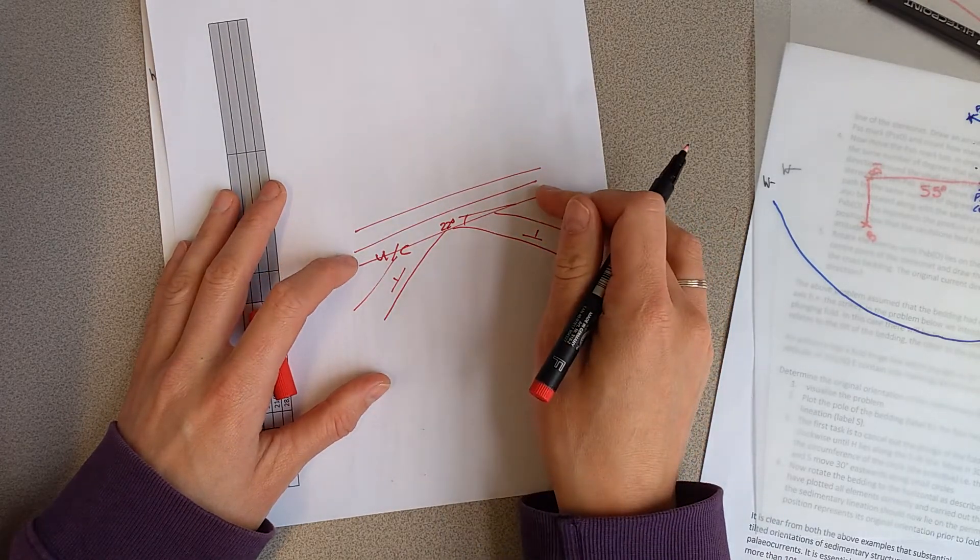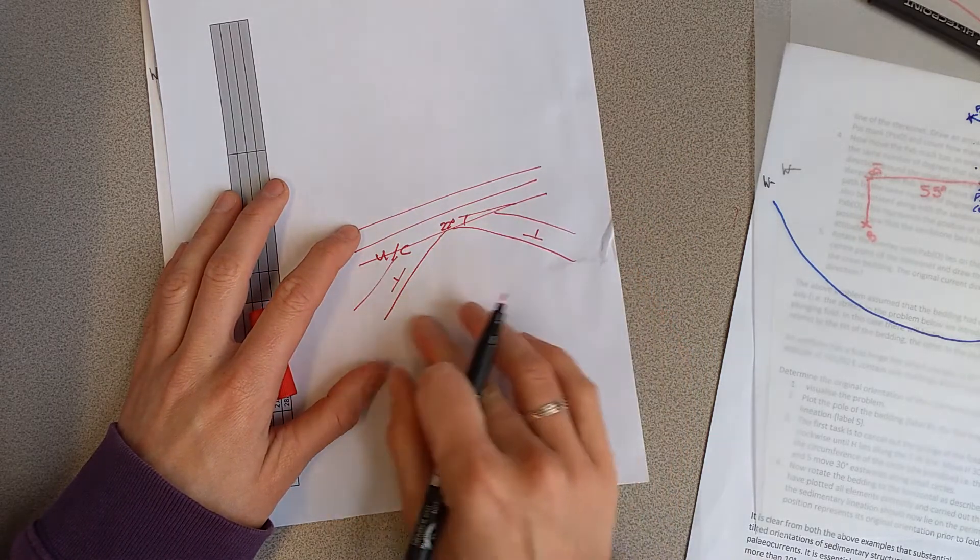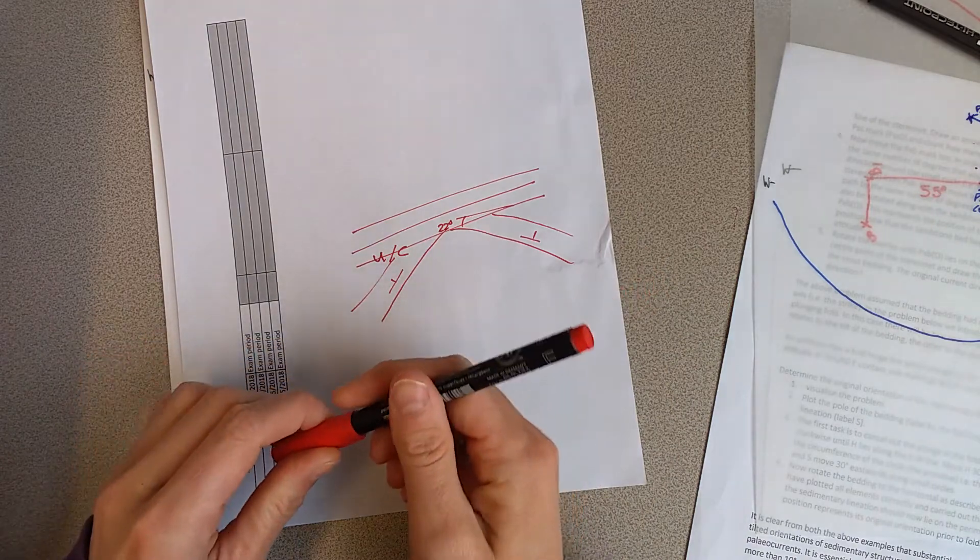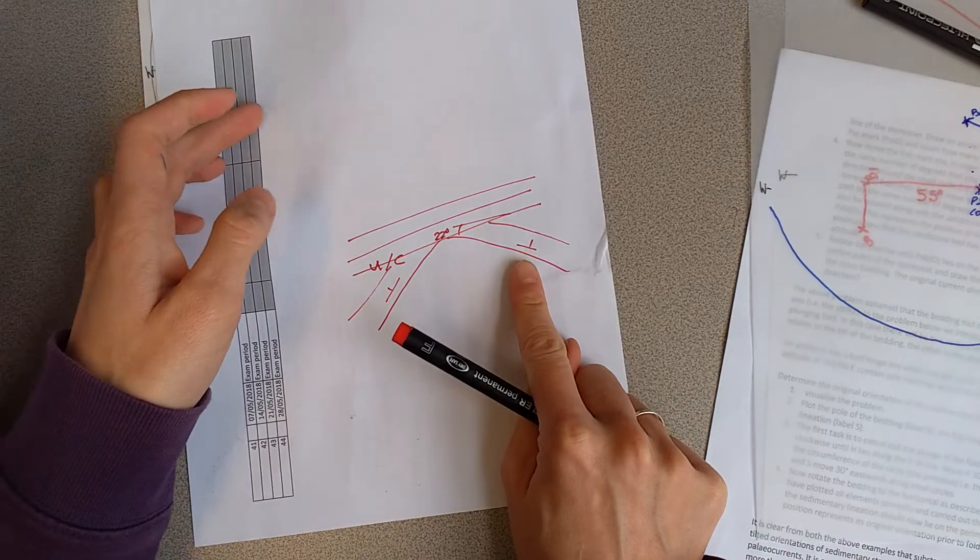What we're going to do is restore the tilting of the unconformity in order to understand what the original surface was like when those sediments were deposited on top of this fold.